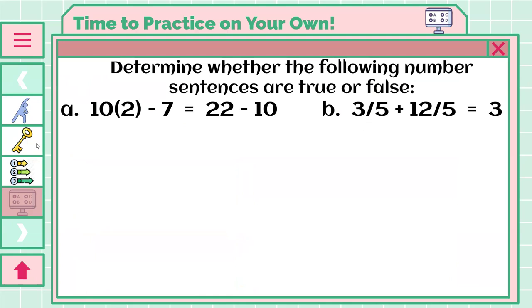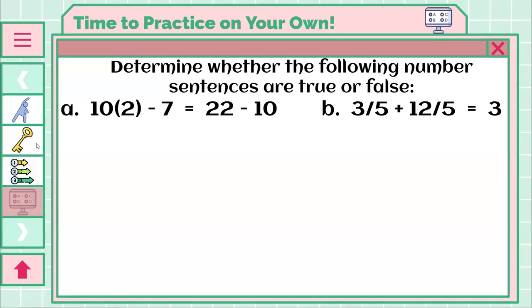All righty, doing a check-in. Of course, pause if you don't have your answers in yet. For A, if you first noticed and chose to do some multiplication here, because you have 10 times 2, and you got 20. So 20 minus 7 equals 22 minus 10, you were good so far. From here, if you ask yourself, what is 20 minus 7? Giving you 13. And you ask, well what is 22 minus 10? Which should give you 12. You are still doing great.